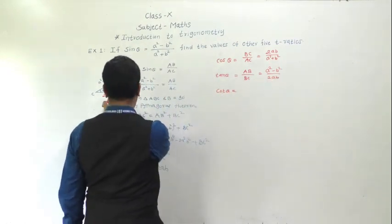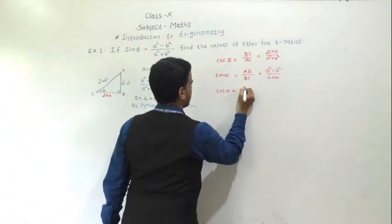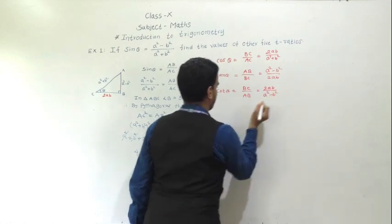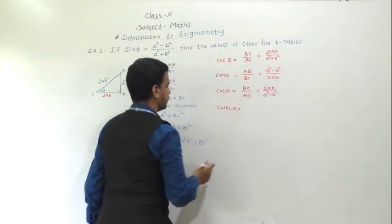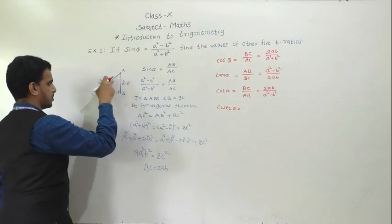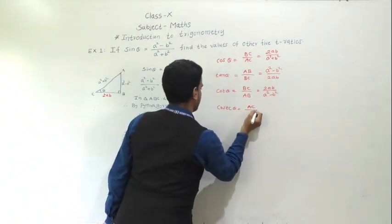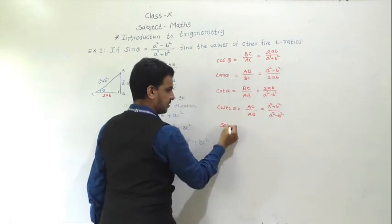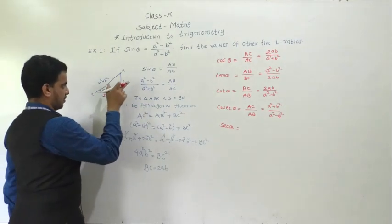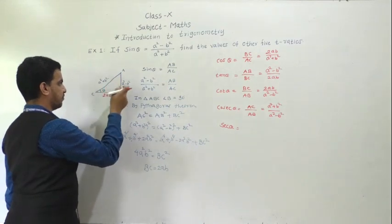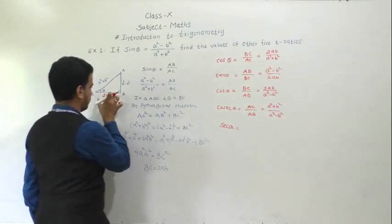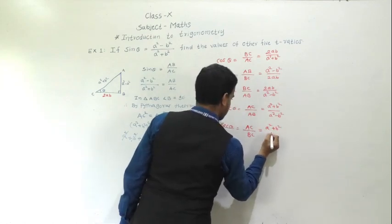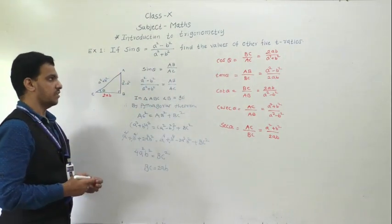Cot θ equals adjacent side upon opposite side, that is BC upon AB, or the reciprocal of tan θ, which is 2ab / (a² - b²). Cosec θ is the reciprocal of sin θ, or hypotenuse by opposite side: AC by AB, so (a² + b²) / (a² - b²). Sec θ equals hypotenuse by adjacent side: AC by BC, so (a² + b²) / 2ab. These are the other five trigonometric ratios.